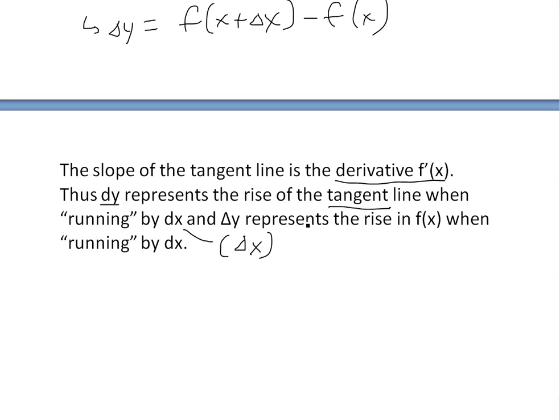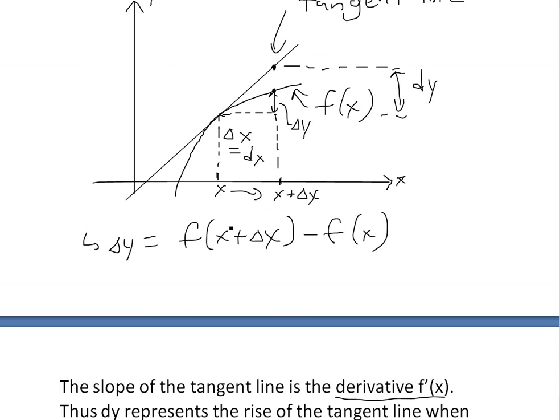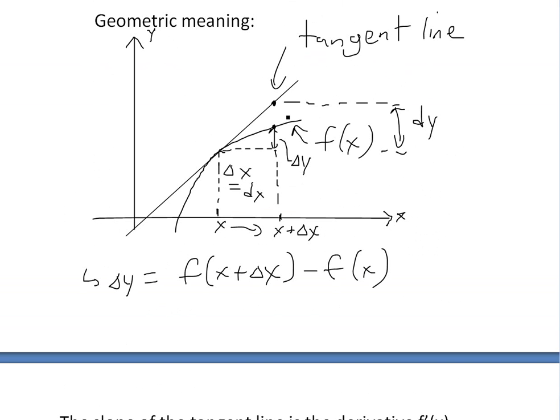So now you're running. And delta y represents the rise in f of x when running by dx. Yeah, but by dx. So basically, this is a rise in f of x, and then the dy is rise of the tangent line.